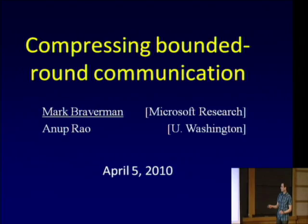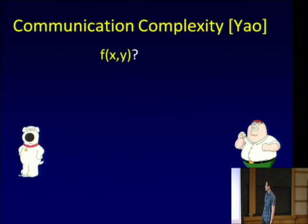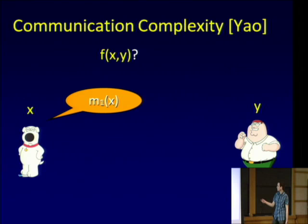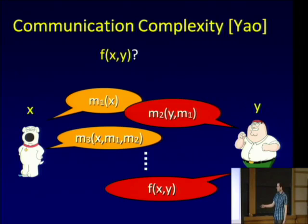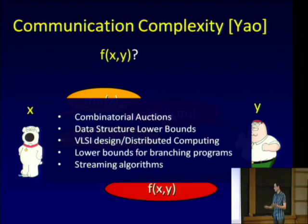So just a very quick introduction to two-party communication complexity. We have two parties with two inputs, and they want to compute some function f of x, y, and they exchange messages. The first message depends on the input x. The second message depends on the first message and the input y, and so on. The goal is for both parties to have the output of f of x, y. There are several good things about two-party communication complexity — we can actually prove interesting things about it unconditionally, and it has a lot of different applications in different areas.